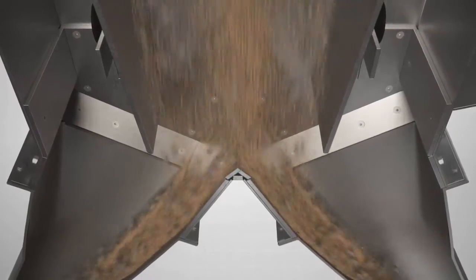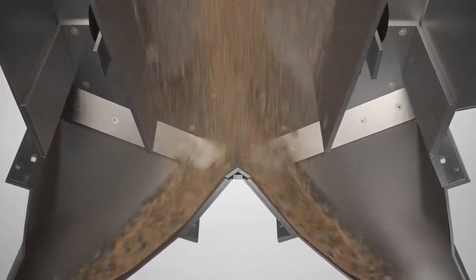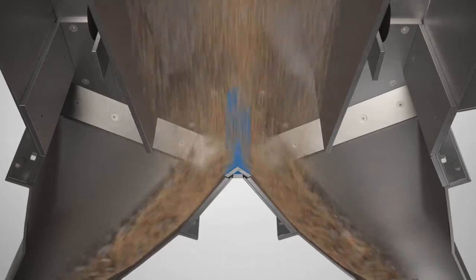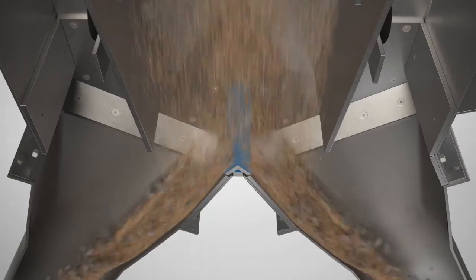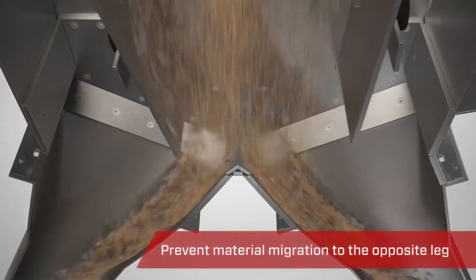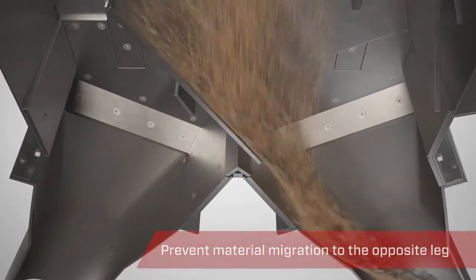Between the outlet legs, the pivoting shoot diverter features a replaceable wear and containment bar. Its chromium carbide construction protects against wear from the material handled. Its ledge hinders material migration into the opposite leg.